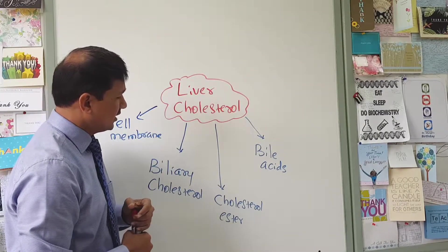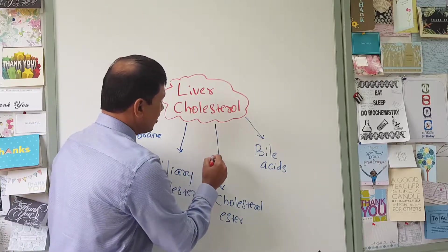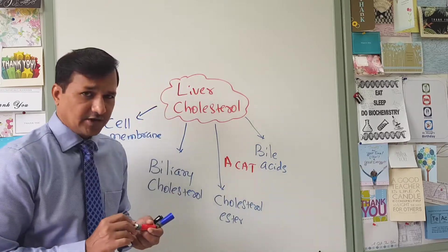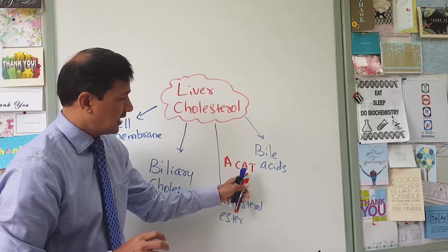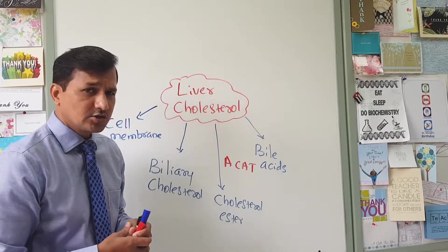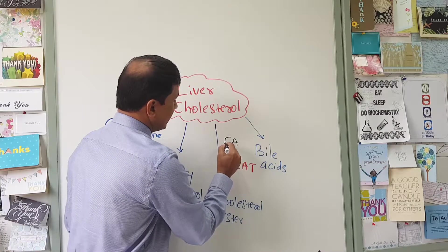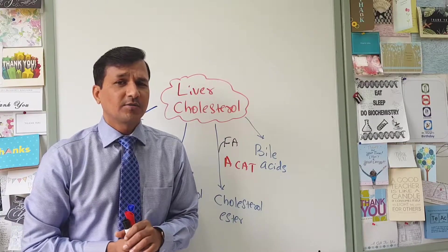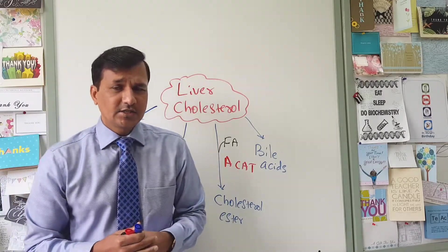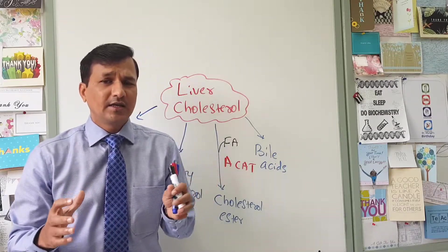The third fate of cholesterol in the liver is conversion into cholesterol ester. This is done by an enzyme called ACAT — acylcholesterol acyltransferase — which is located in the liver and also in other tissues. It converts cholesterol into cholesterol ester by adding a long-chain fatty acid to the hydroxyl group present at the third carbon of the cholesterol molecule. This cholesterol ester is then loaded onto apolipoprotein B100 to make the VLDL molecule.